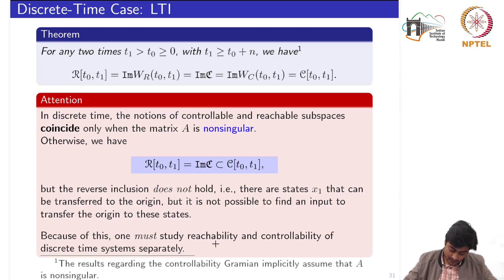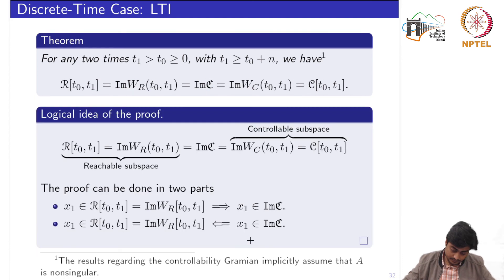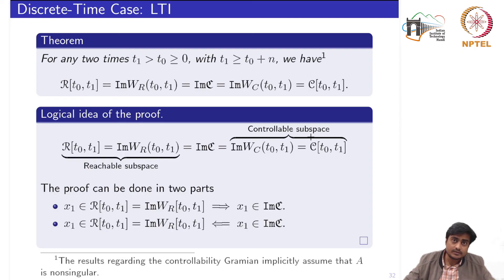Because of this distinction, one must study reachability and controllability of discrete time systems separately. For continuous time systems we could study either one and prove our results. But for discrete time, if the matrix A is singular, we need to study both concepts separately. The proof can be done in two parts similar to what was done previously, showing both equivalences for the controllable subspace characterization and the reachable subspace characterization.